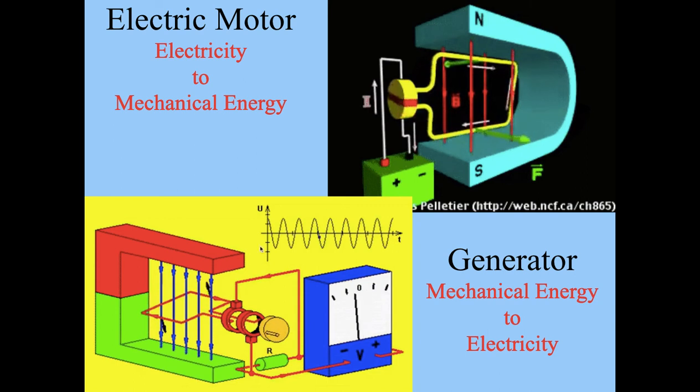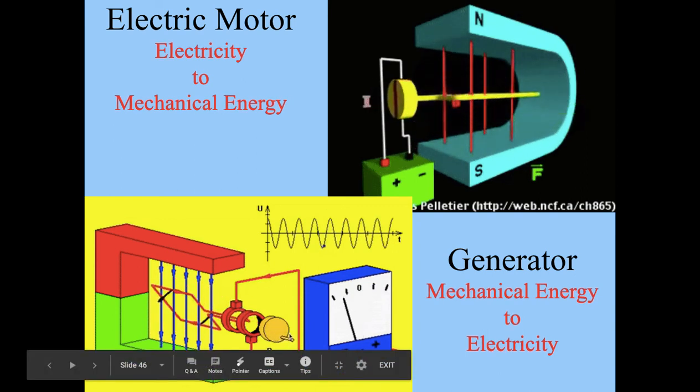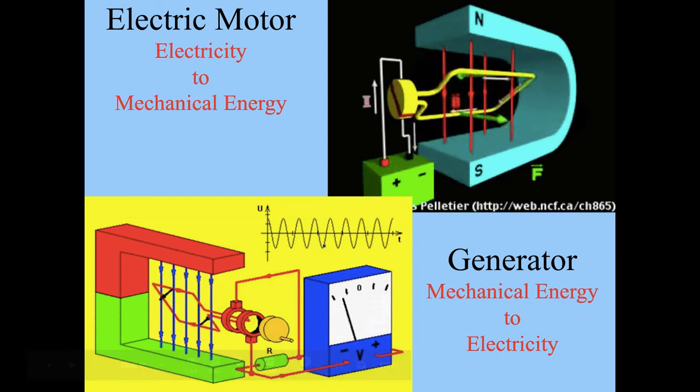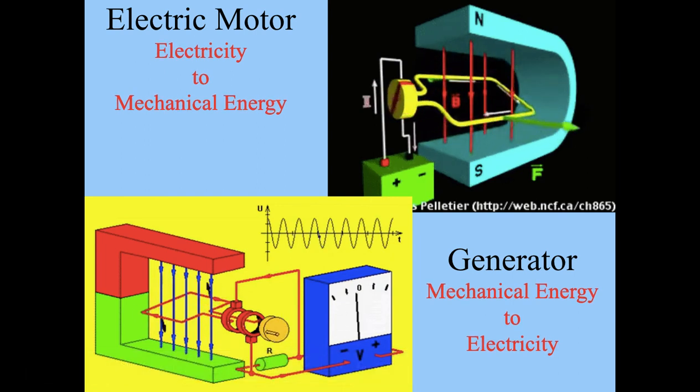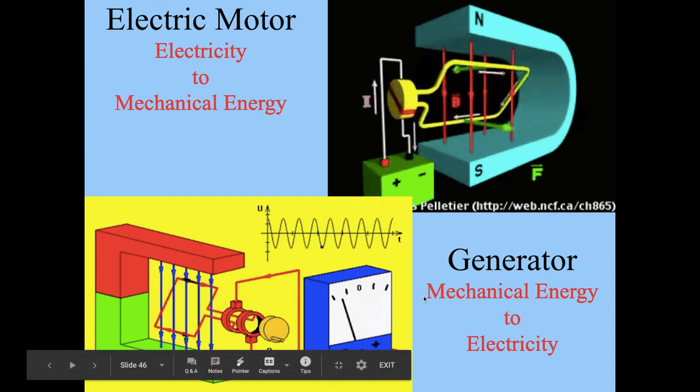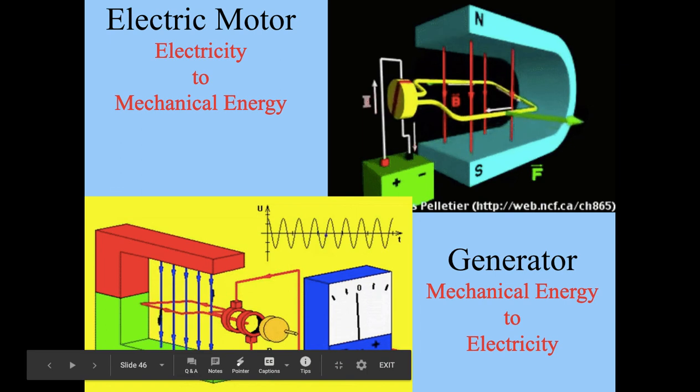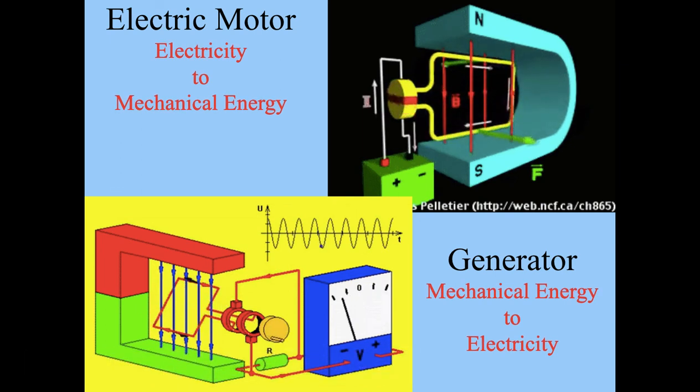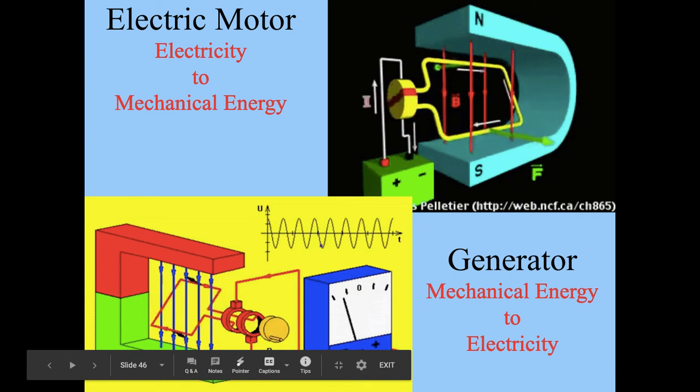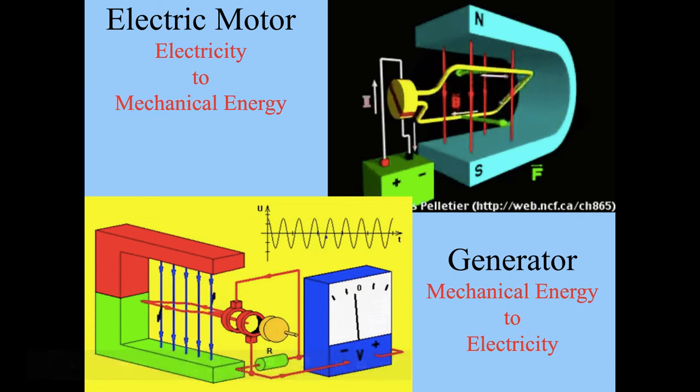The opposite of that is a generator. When you get something to spin the wire, and that could be a windmill or water falling or a generator, coal creating steam to power a generator. And when you have that motion in the magnetic field, you produce current. So those are kind of important, not for your unit, but for your life, not for region physics, but your life.